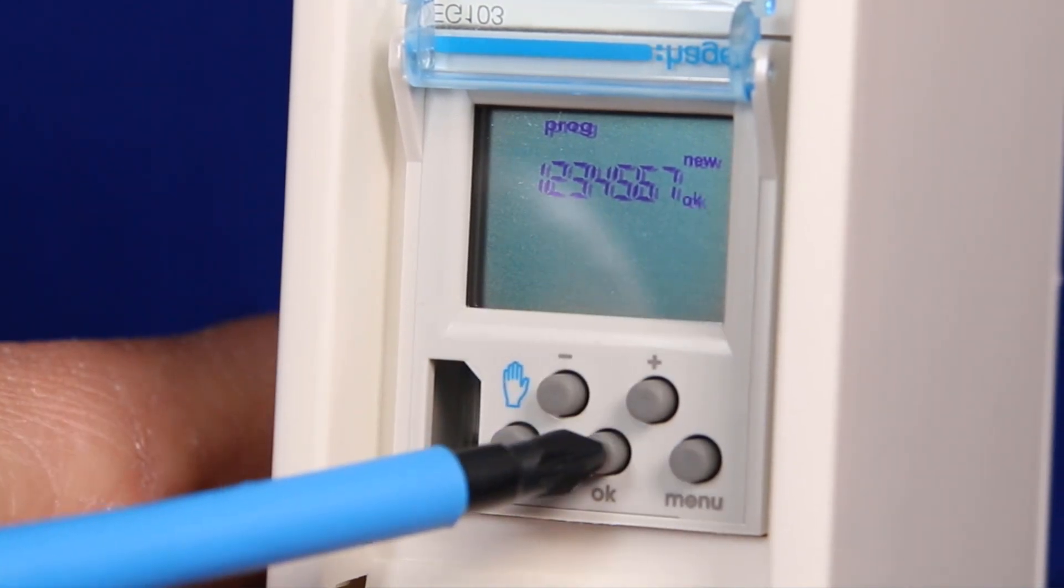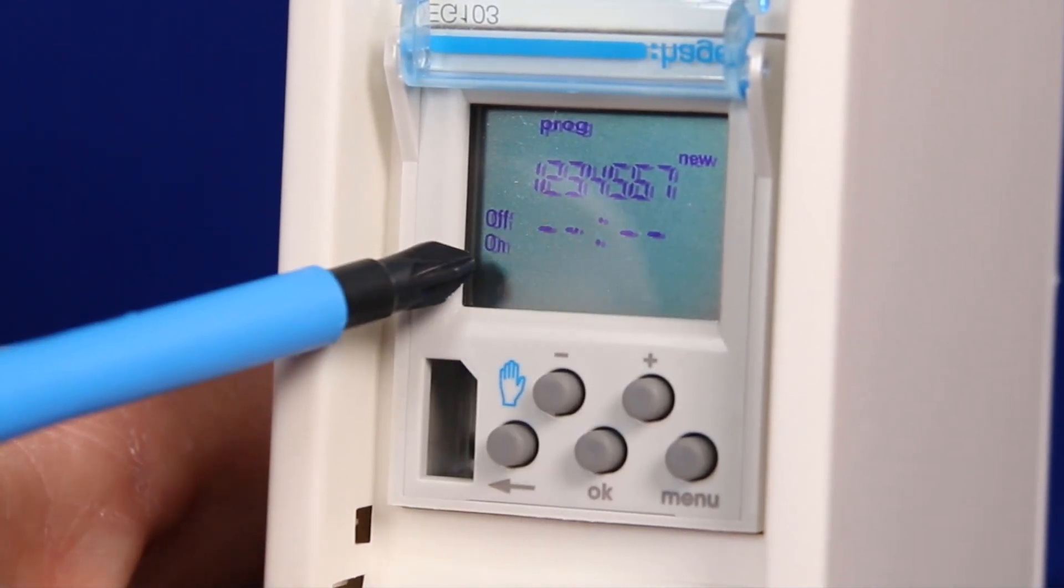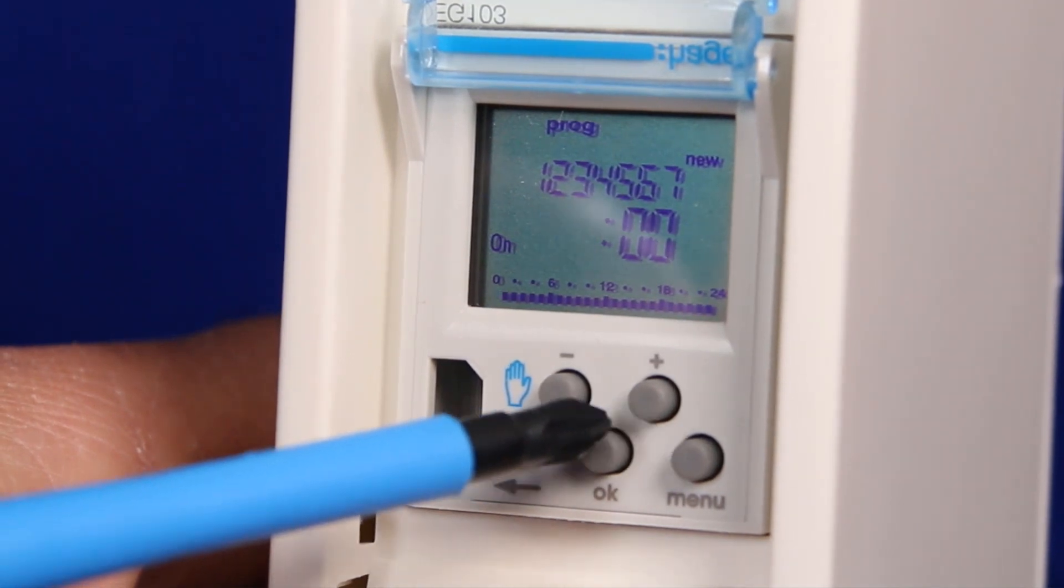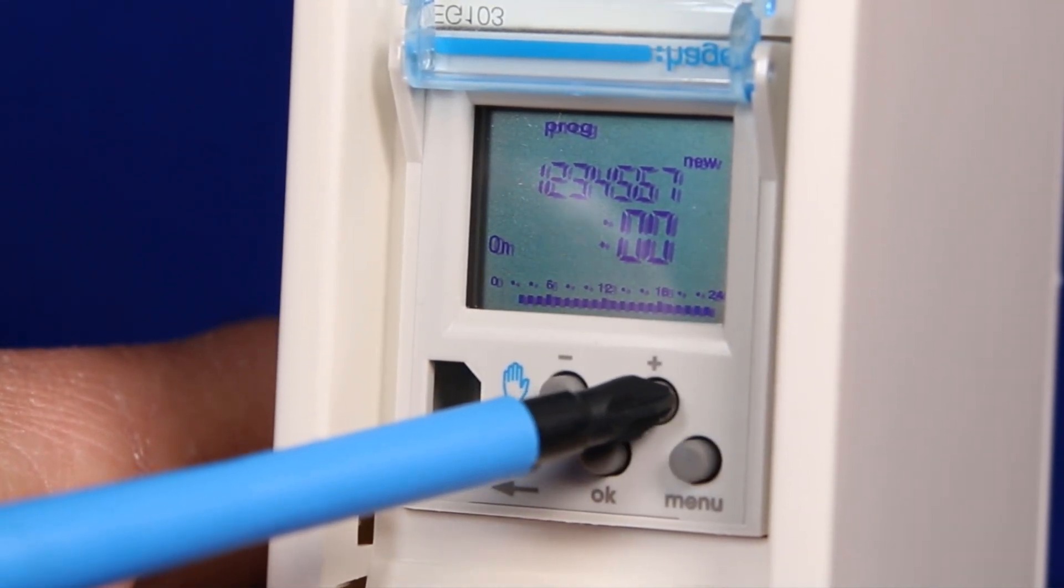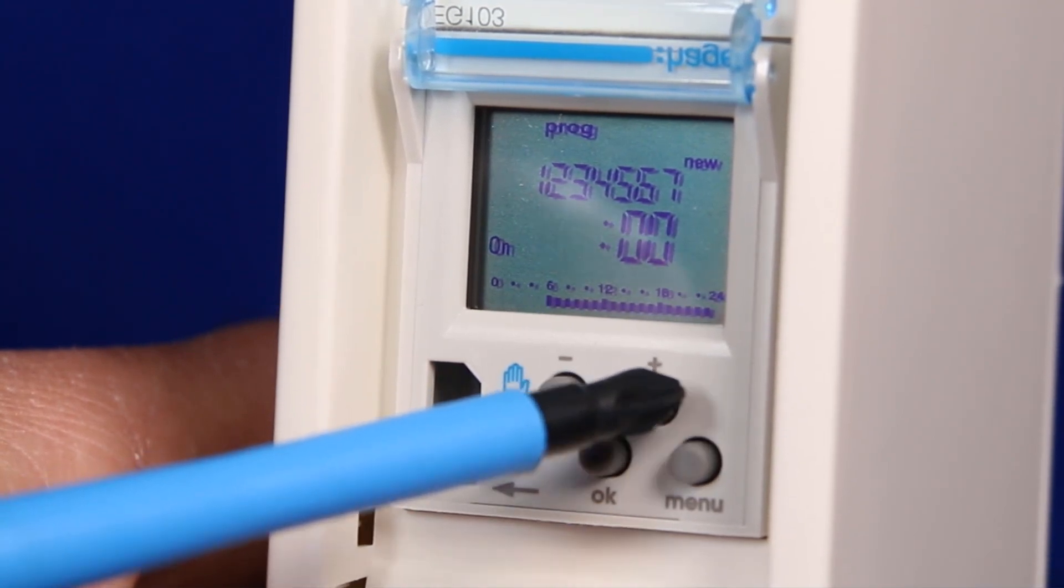After the last ok the clock is asking for the on time. Again we say ok. The time hours then starts flashing. We now press plus until 0900, 9 o'clock am, starts flashing.